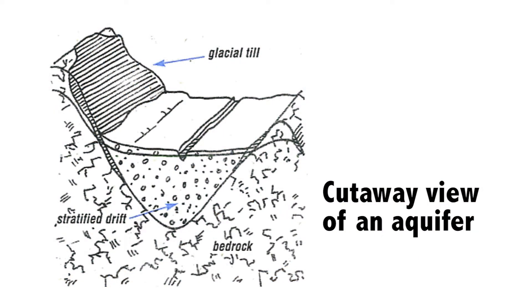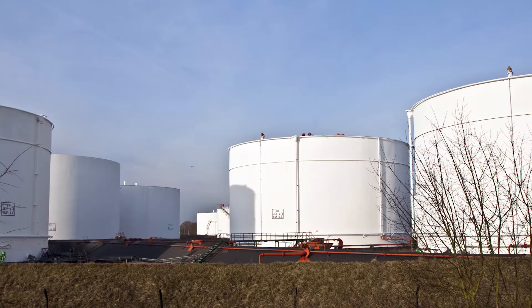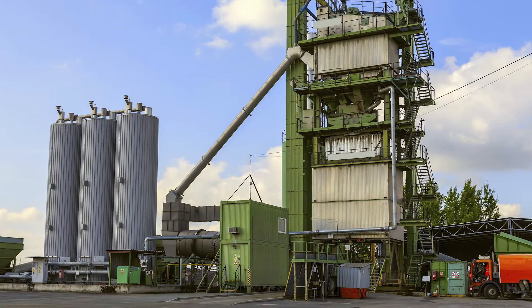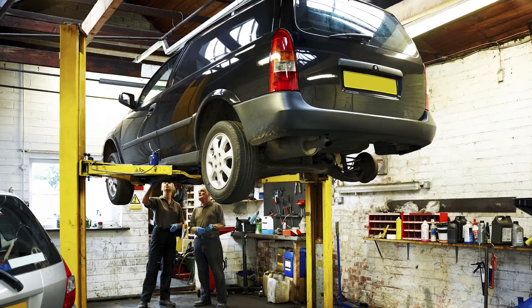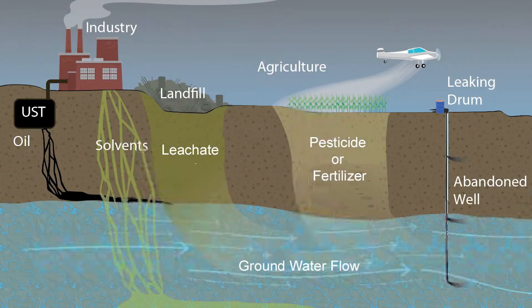The river valleys are also where we have our most intensely developed land. Cities and towns in the river valleys have commercial and industrial development with many potential sources of contamination. These stratified drift aquifers are susceptible to pollution from the overlying land uses and unfortunately they can be easily contaminated.